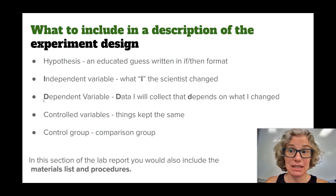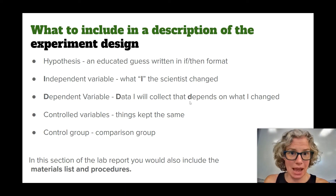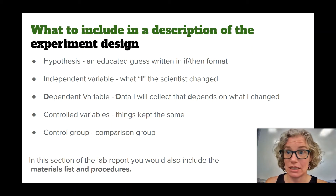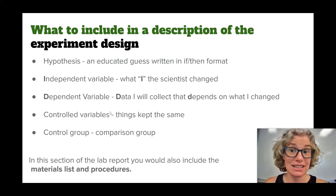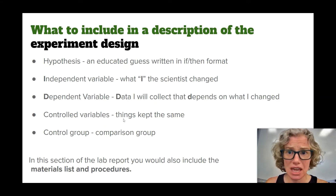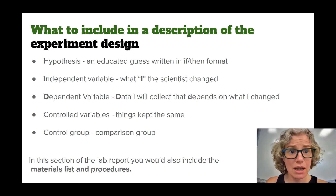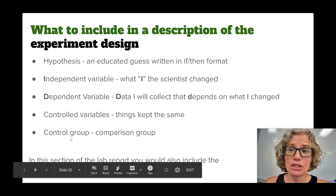The dependent variable starts with a D, and this is the data that depended on what I changed — dependent data depends. The controlled variables is your list; notice this has an S, so that means we're coming up with more than one thing. This is the list of all the things I kept the same in the experiment to make sure it's a really fair experiment. And the control group is going to be my comparison group.